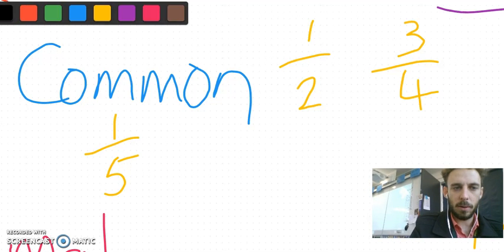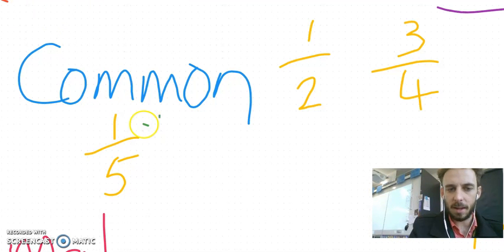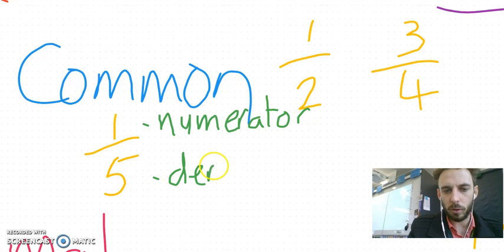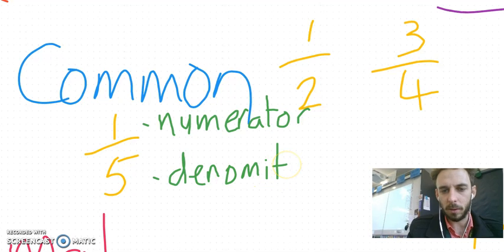And if we really get tuned to it, we can see that the number on top of a fraction is called a numerator and the number down the bottom is called a denominator. So if we're looking to lock in correct mathematical language, denominator.